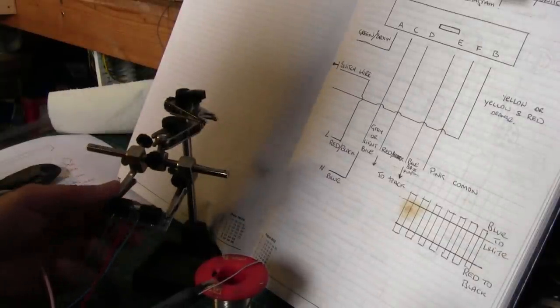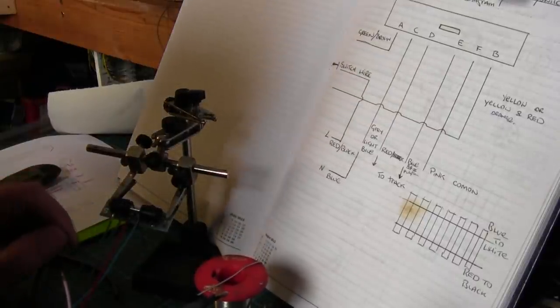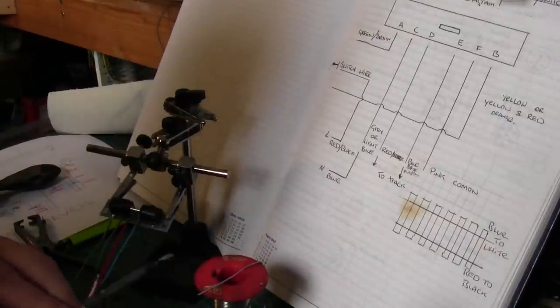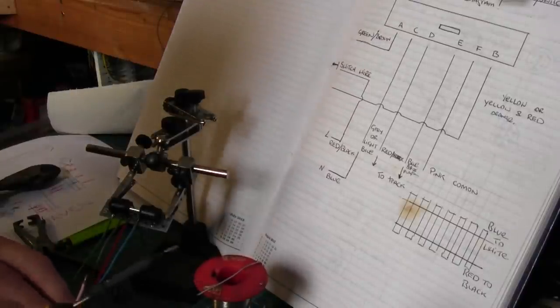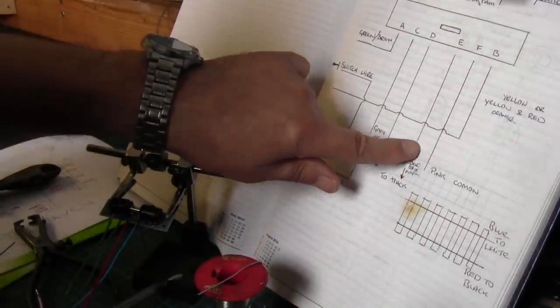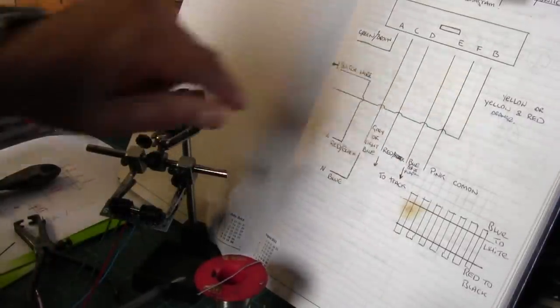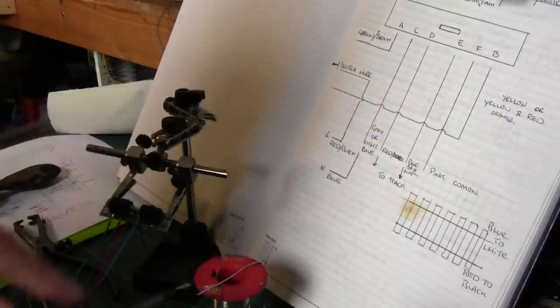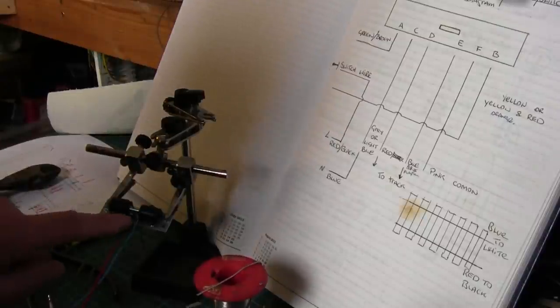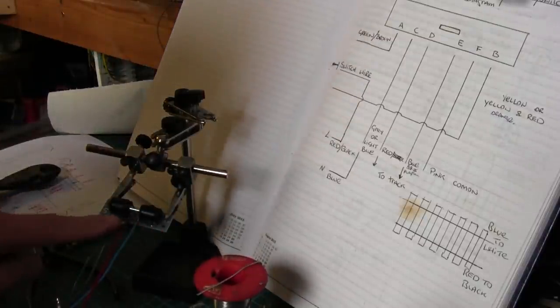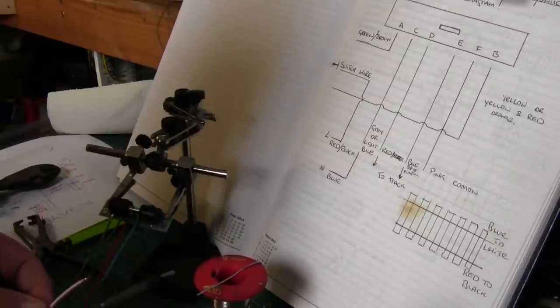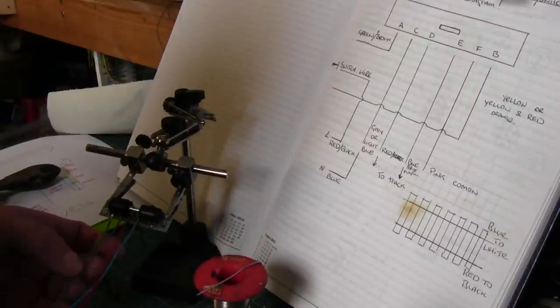Basically you follow the instructions that you get with the points, but I've just made it simpler for myself by adding color codes to all the cables. As you can see there on my own drawing, the ACDEFB is actually on the point motor itself, so it's quite straightforward to follow.